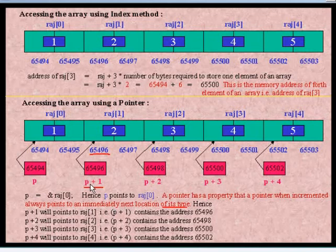That's why pointer arithmetic is faster than the index method. In the index method, we must multiply two numbers and then add to the base address. These two operations consume time. But here, if you increment P, it directly accesses the next element. That's why the pointer method is faster for accessing array elements. Thank you.